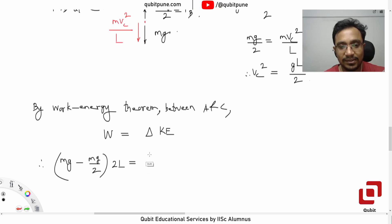And then on this side, it will be half M V_0 squared minus half M V_C squared, which can be GL by two.